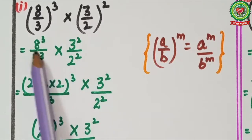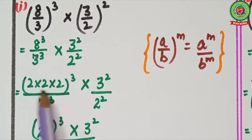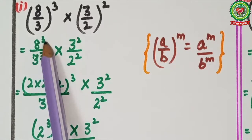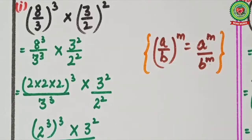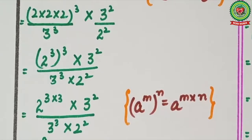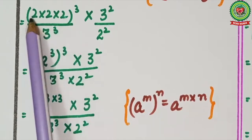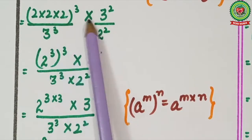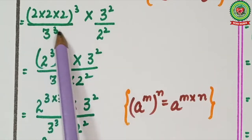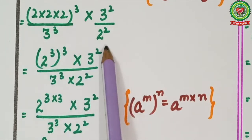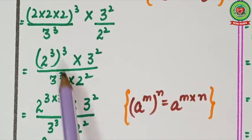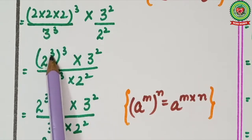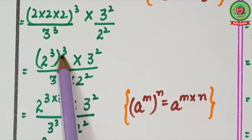Now, 8 raised to power 3 can be factored further. Since 8 equals 2 × 2 × 2, we write (2 × 2 × 2) raised to power 3, which gives us (2 raised to power 3) whole bracket raised to power 3, multiplied by 3 raised to power 3 upon 3, all upon 2 raised to power 2.